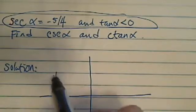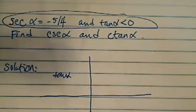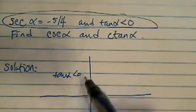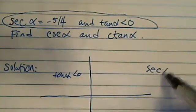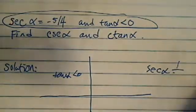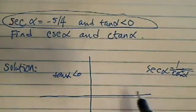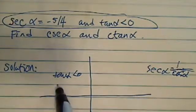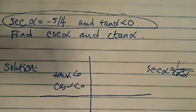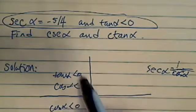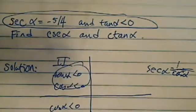Tangent alpha is less than 0 in quadrants 2 and 4. Secant alpha is 1 over cosine alpha, so you're looking for where 1 over cosine alpha is less than 0. Cosine alpha is less than 0 in quadrants 2 and 3. So obviously the quadrant is number 2.